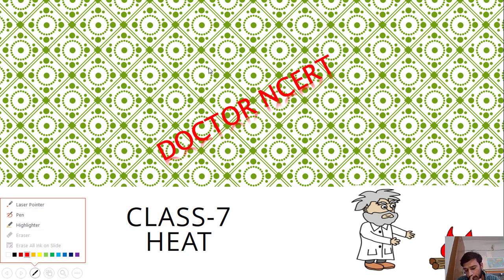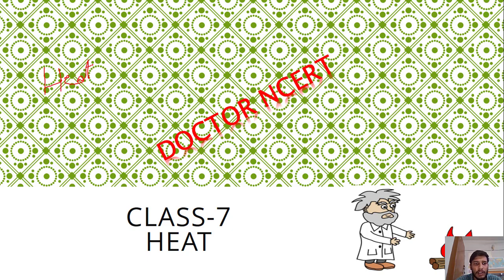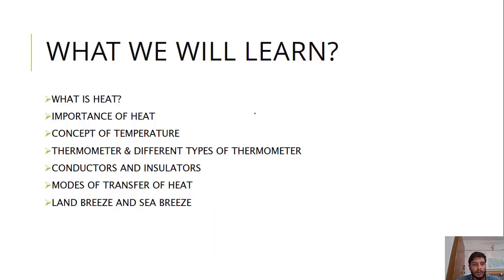Earth receives all the energies. All the life processes that occur on earth are basically because of sun. Sun is a source of heat as well as energy. What is heat? In this chapter we will learn about heat and temperature, the modes of transfer of heat, and many more phenomena associated with it.